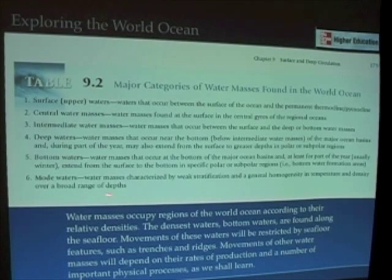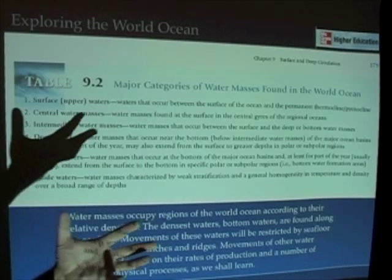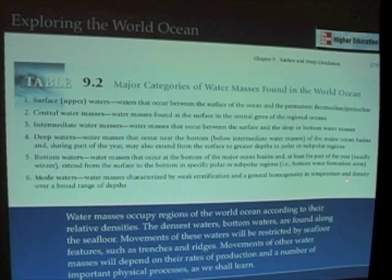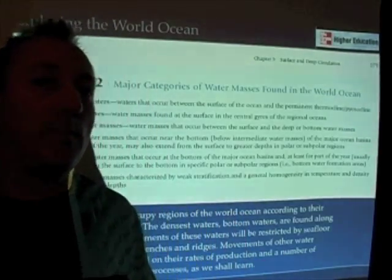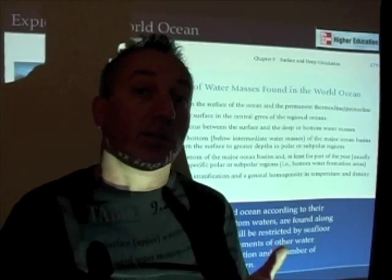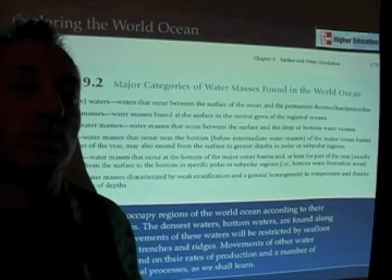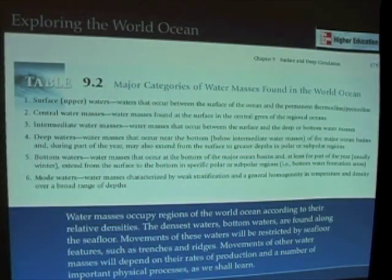Oceanographers in recent years have also described what are called mode waters. They aren't necessarily completely homogeneous, but they occupy major parts of the ocean and are generally the same kind of temperature and density over a broad range of depths. It's a different way of looking at water masses — not so critical for this introductory oceanography course, but it is an important term for physical oceanographers and those going on to advanced physical oceanography classes to understand.